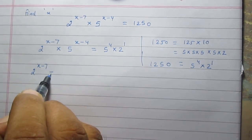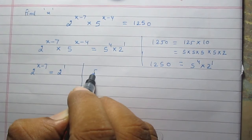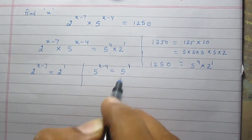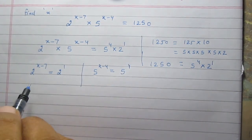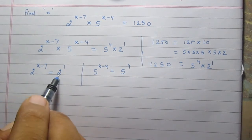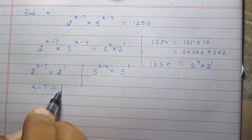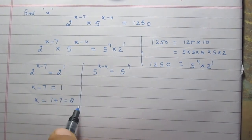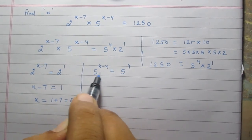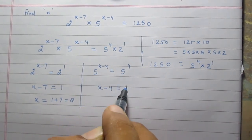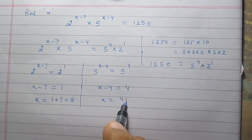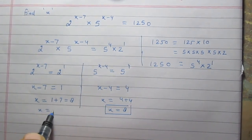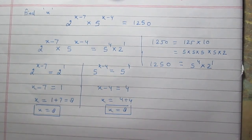On comparing, 2^(x-7) = 2^1 and 5^(x-4) = 5^4. Since the bases are the same, the powers are equal. So x minus 7 = 1, giving x = 8. Also, x minus 4 = 4, giving x = 8. In both cases, x is equal to 8.